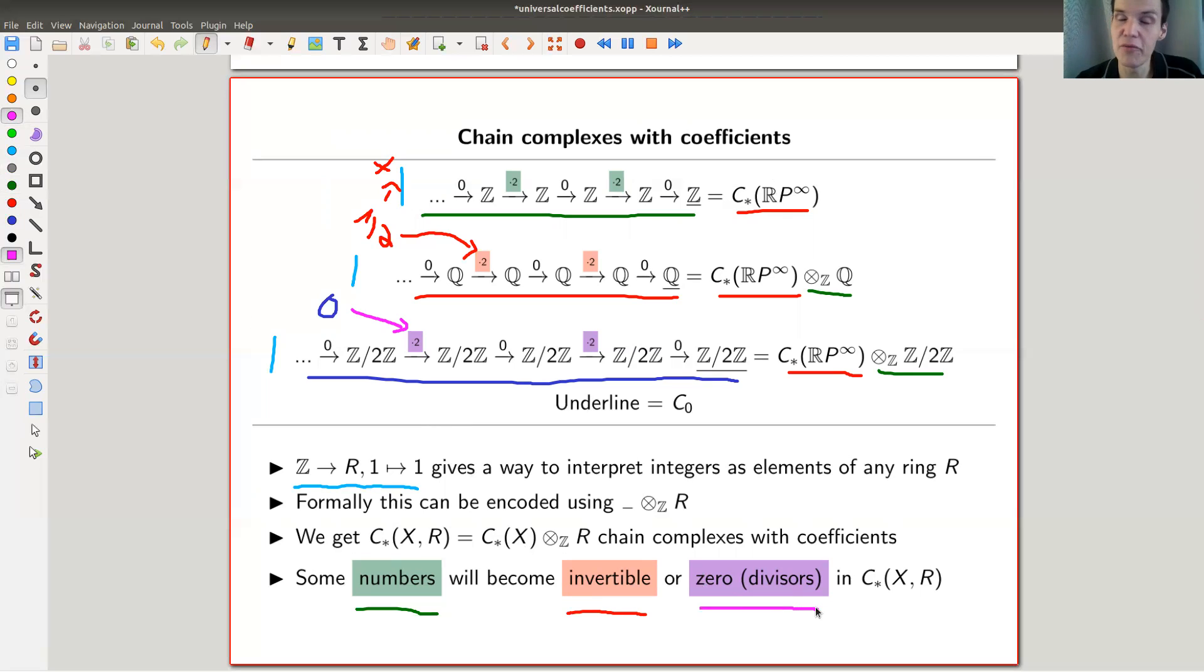And the universal coefficient theorem is to capture the discrepancy between numbers getting 0 and numbers getting invertible. Just to get the notation straight here, whenever I write C_*(X;R), so X is some space - in this example it was infinite projective space - then this is just a chain complex tensored with the corresponding ring. And as I said, the crucial difference is really that maps change their behavior in different ways, which is really crucial. In the end you will get completely different homology.